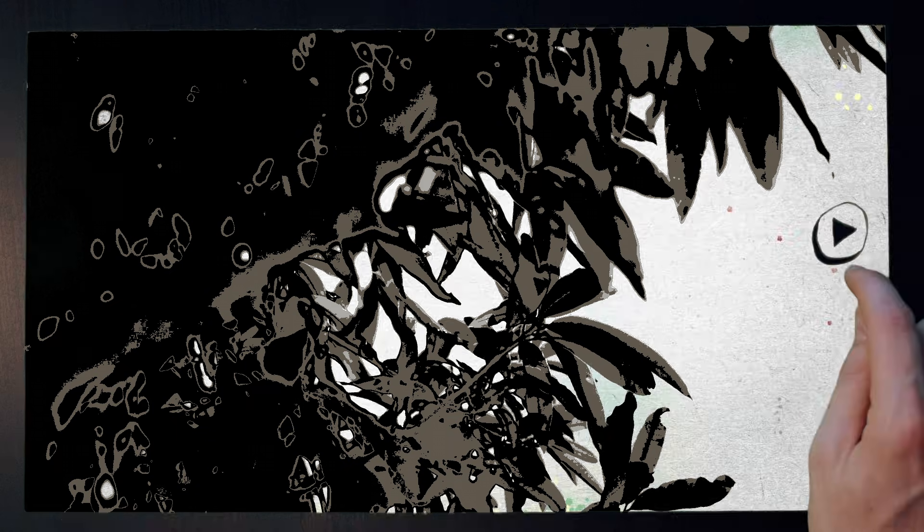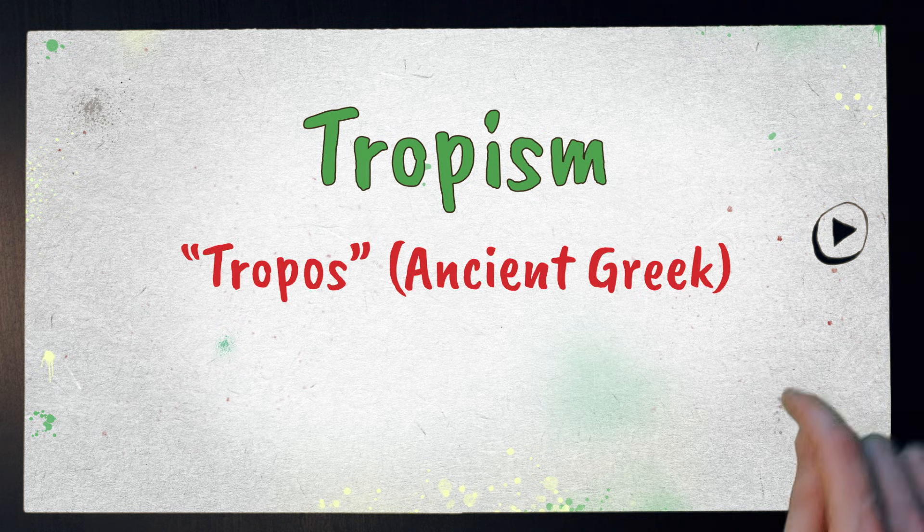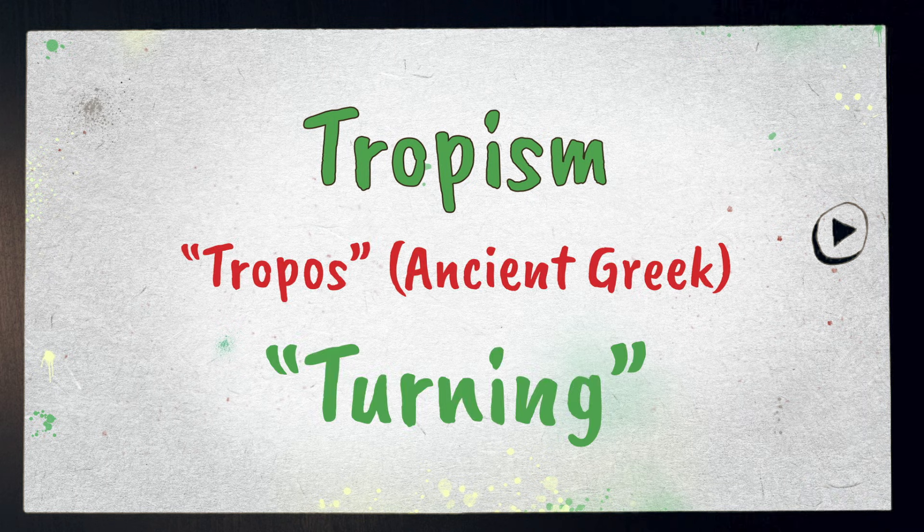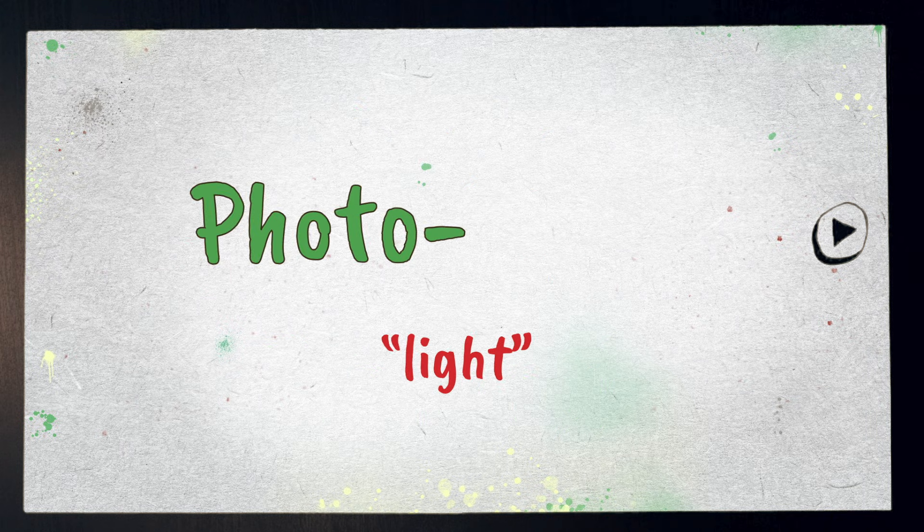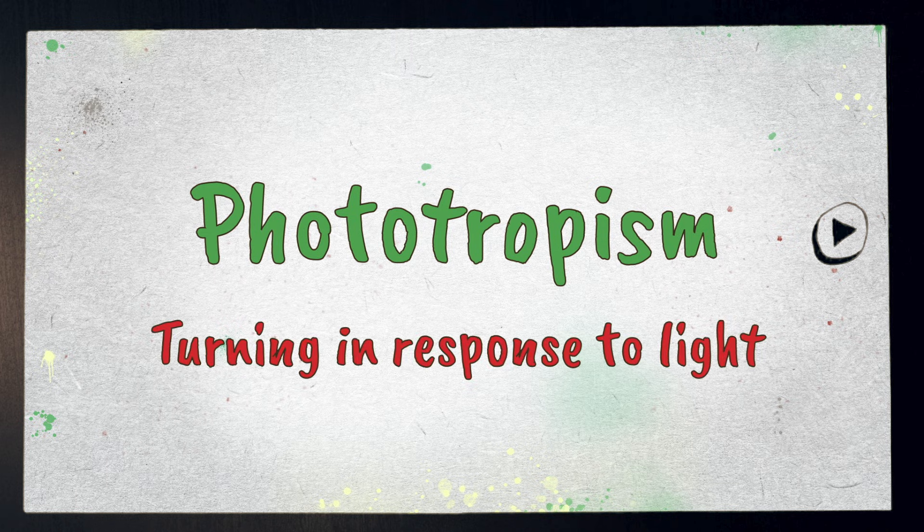We're talking about a certain type of tropism. Tropism comes from an old Greek word tropos, which means turning. When words start with photo, it means it's got something to do with the light. So phototropism is when plants turn or move in response to light.